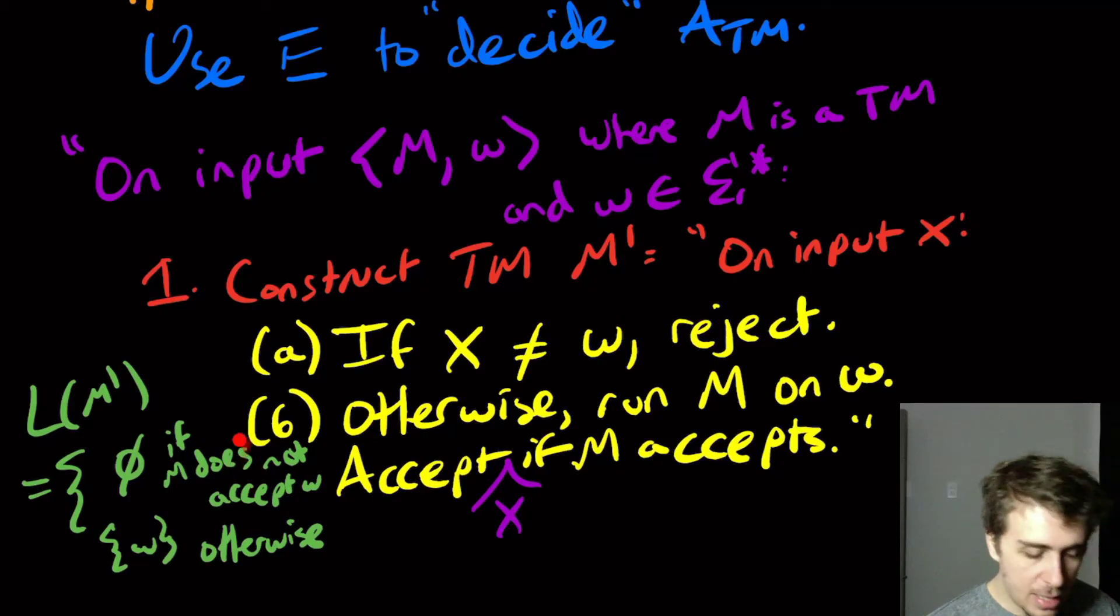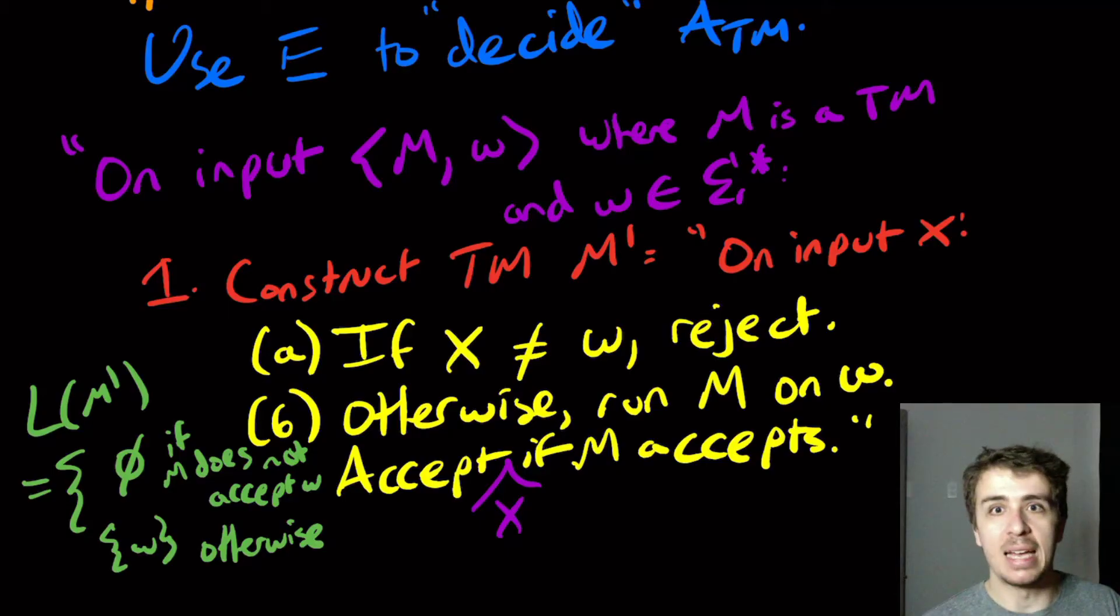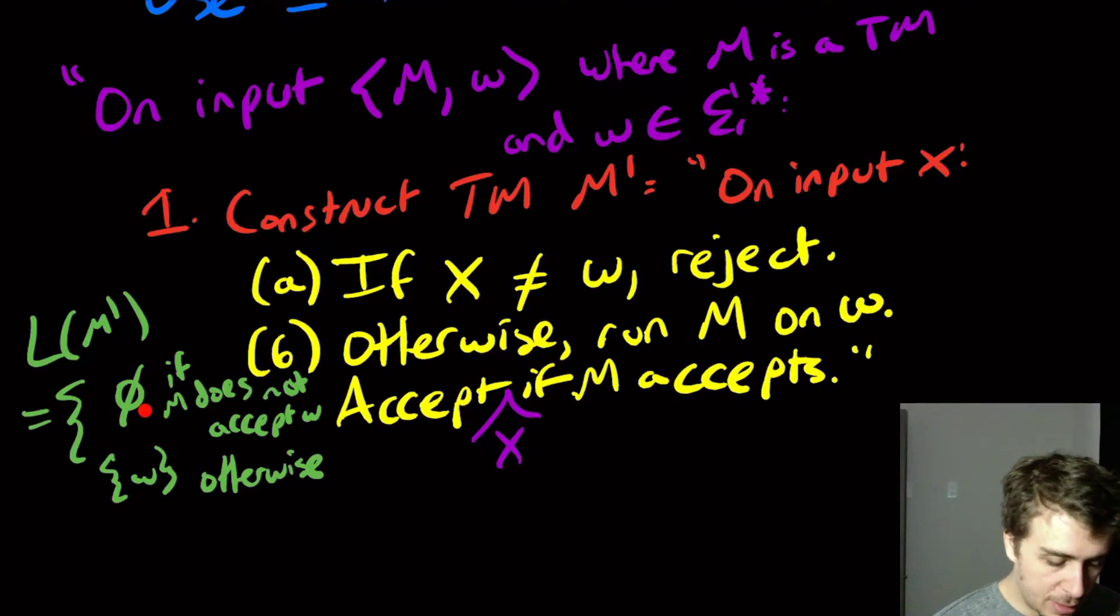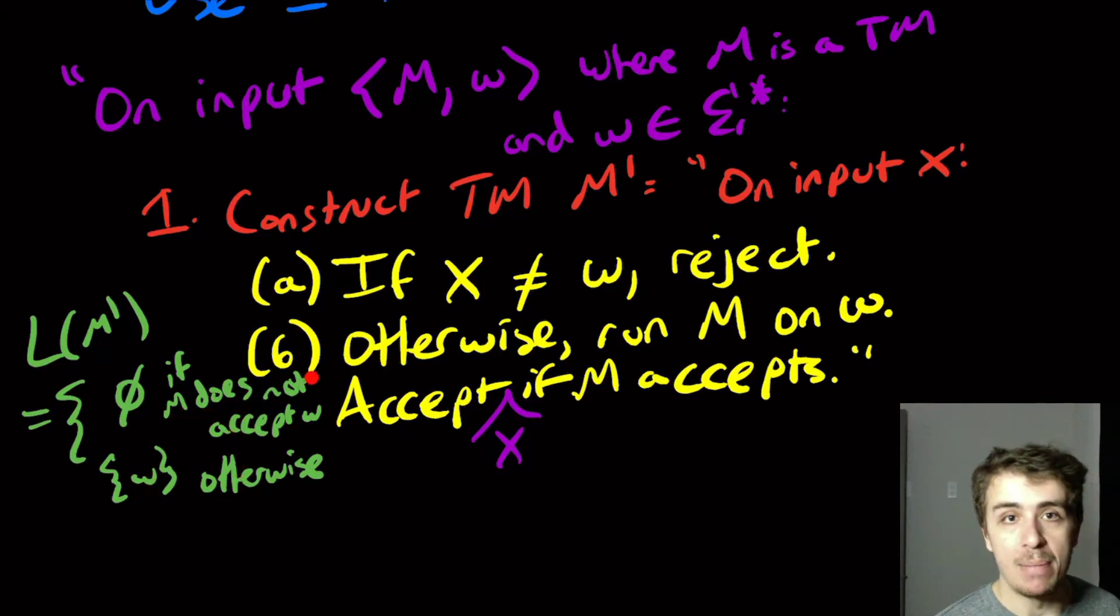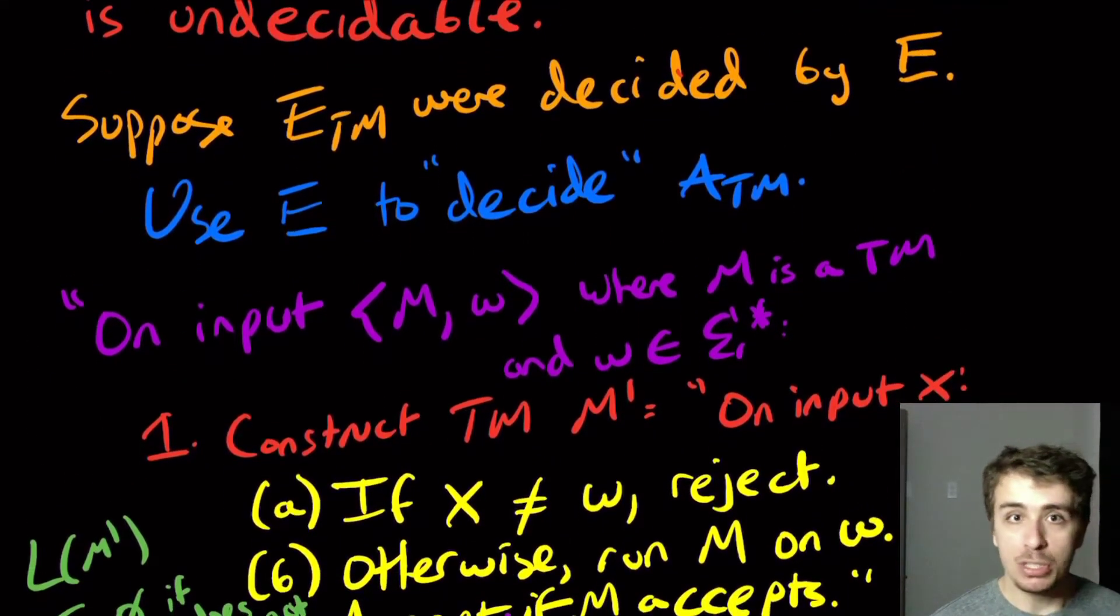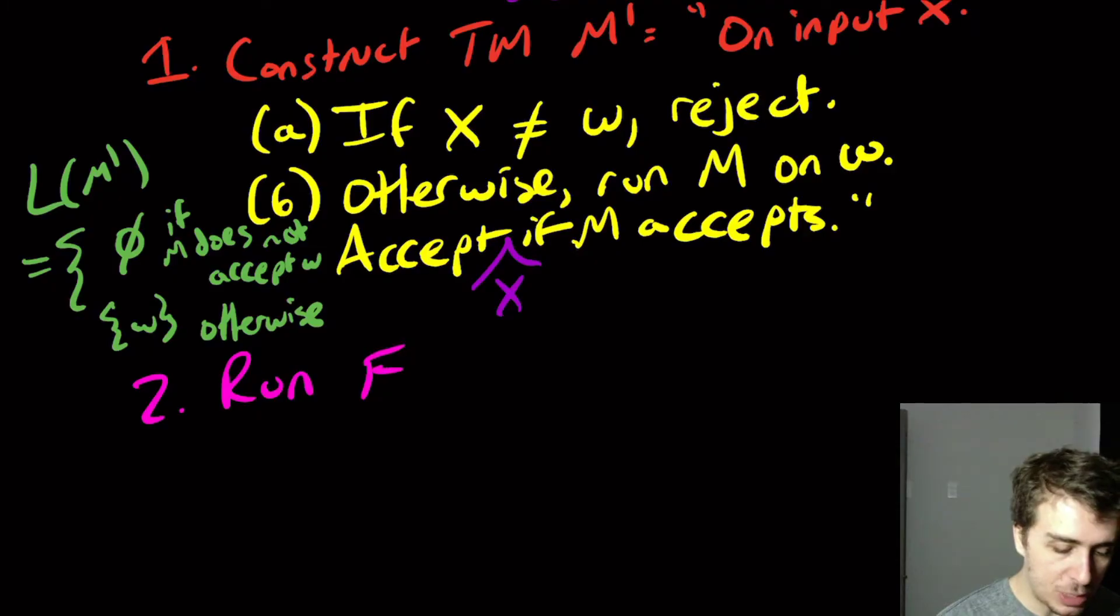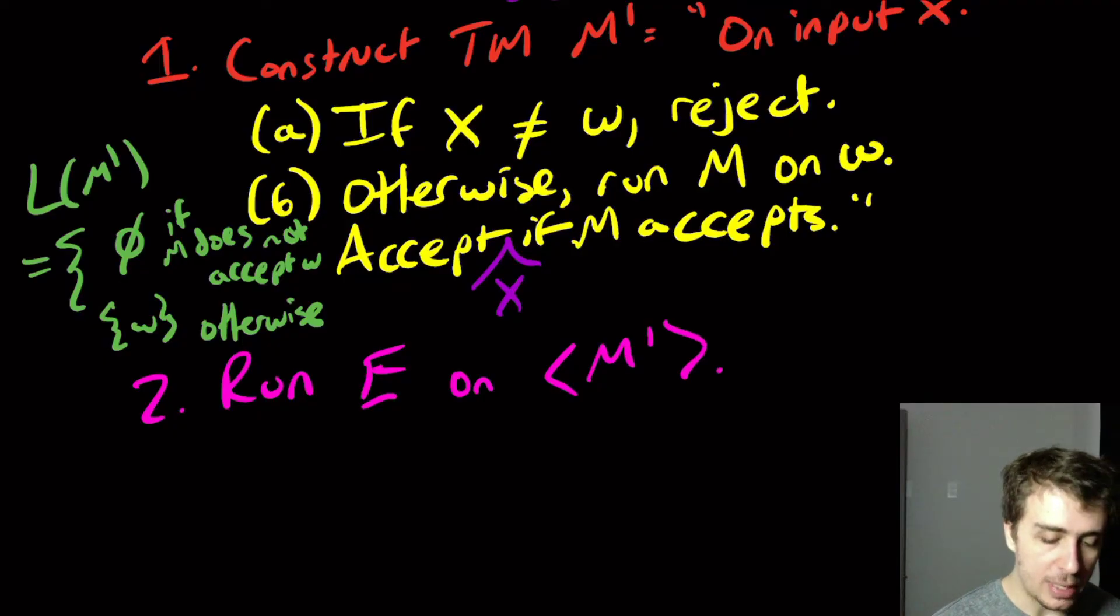Okay, so again, you could have done this either way. You could have had it be just a single string if M does not accept W and empty otherwise. But again, there are many ways of doing this. So what we're going to do here is, well, the difference of whether the language of this machine is empty or not is whether M accepts W. So the answer is in some sense tied to the fact of whether this thing is empty. And we have supposedly a way of figuring out whether it is empty. So here, we're going to run that supposed decider E for the emptiness problem on this new machine that we just made, M prime.